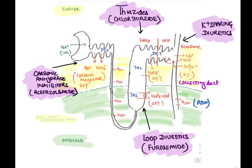After PCT, the nephron descends downward — the descending limb of Henle — which is impermeable to sodium; only water gets reabsorbed. Then it ascends upward into the medulla, forming the thick ascending limb. In the medullary portion, a transporter known as sodium-potassium-2-chloride transporter absorbs 25% of sodium, and this is inhibited by loop diuretics. In the cortical portion of thick ascending limb and early DCT (cortical diluting segment), around 10% of sodium is reabsorbed via the sodium-chloride symporter, which thiazides inhibit — causing sodium loss in urine.